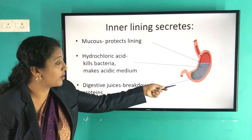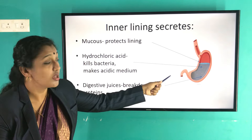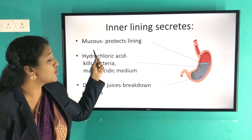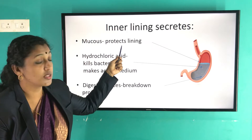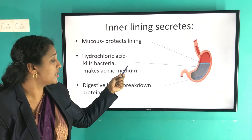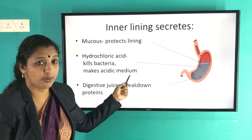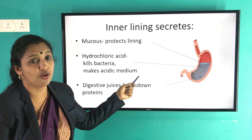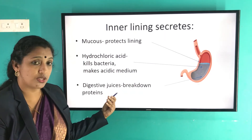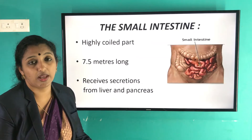The inner lining of the stomach has special glands that secrete different types of substances that help in digestion. The first is mucus, which protects the inner lining of the stomach. The second is hydrochloric acid, which kills bacteria and creates an acidic medium to help the action of digestive juices. The third is digestive juices, which help break down proteins into simpler forms.